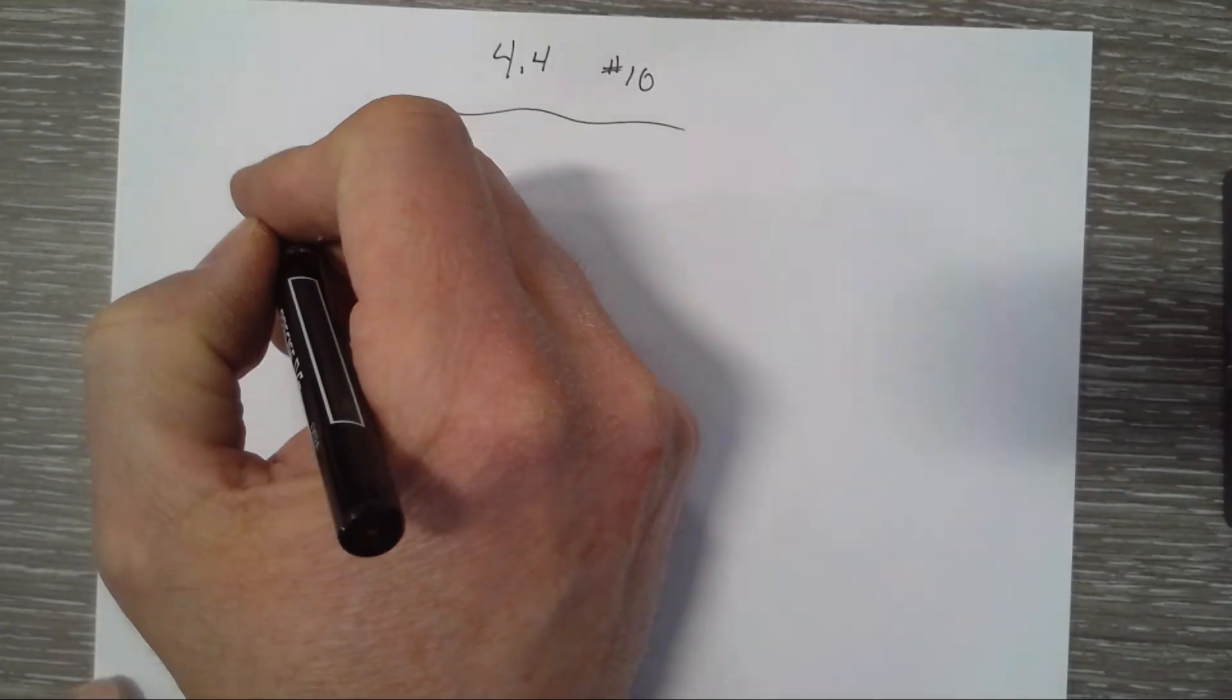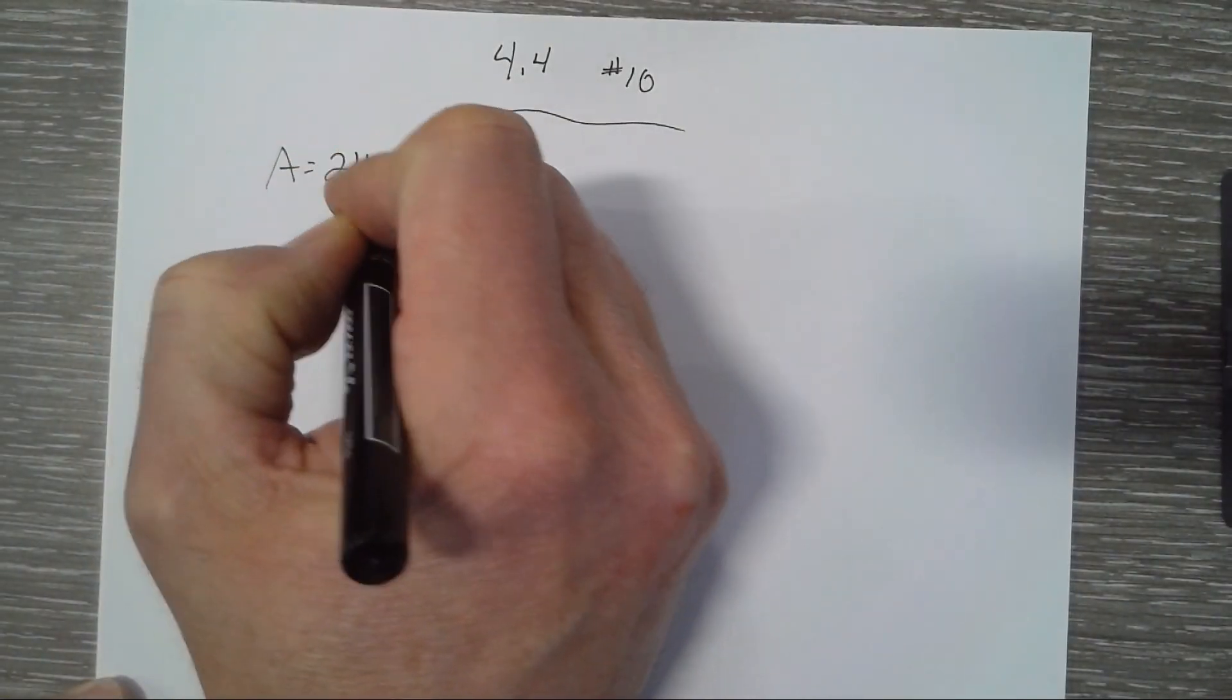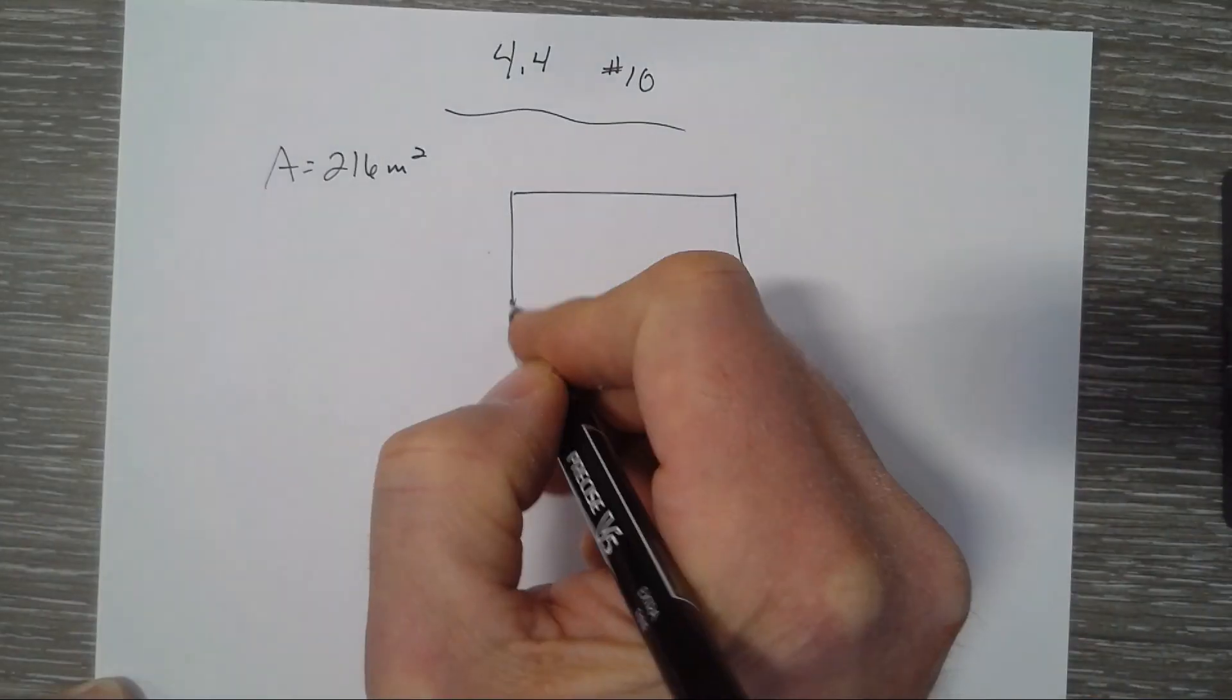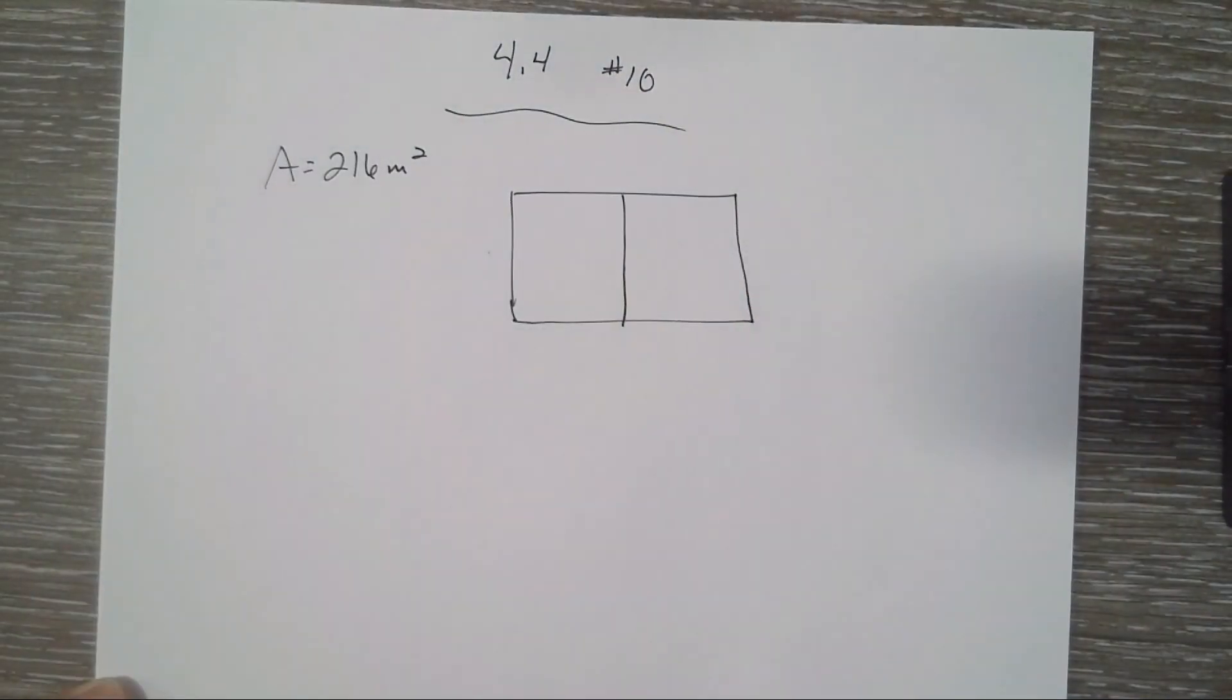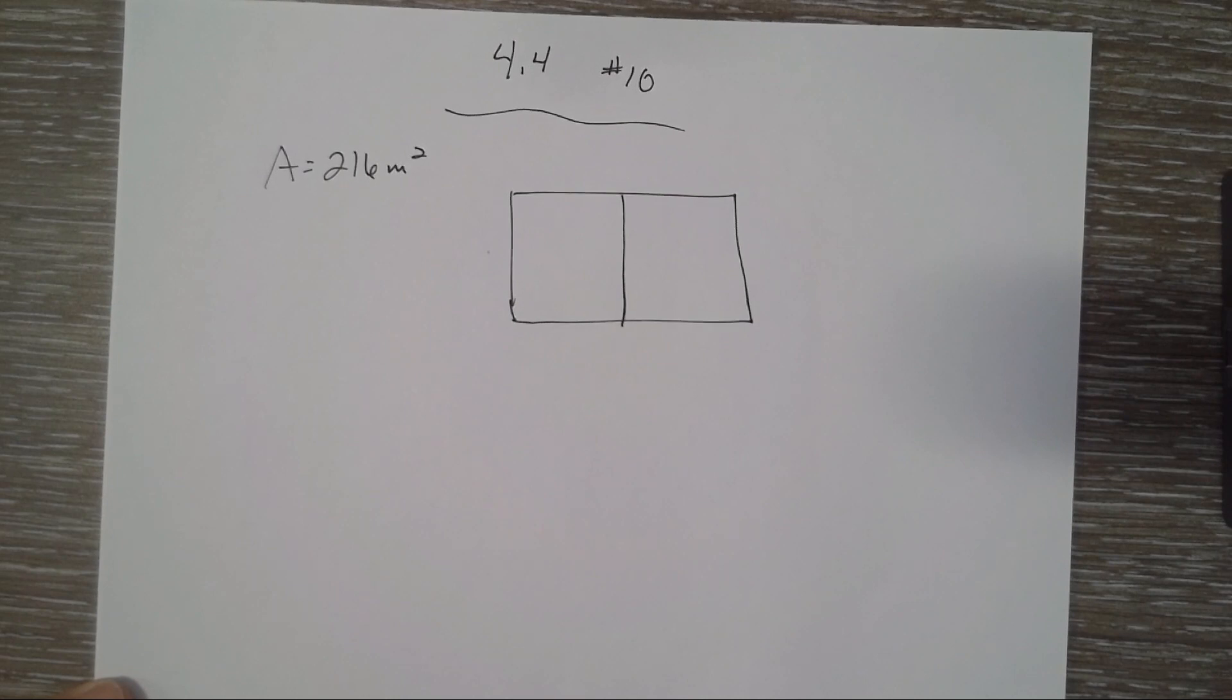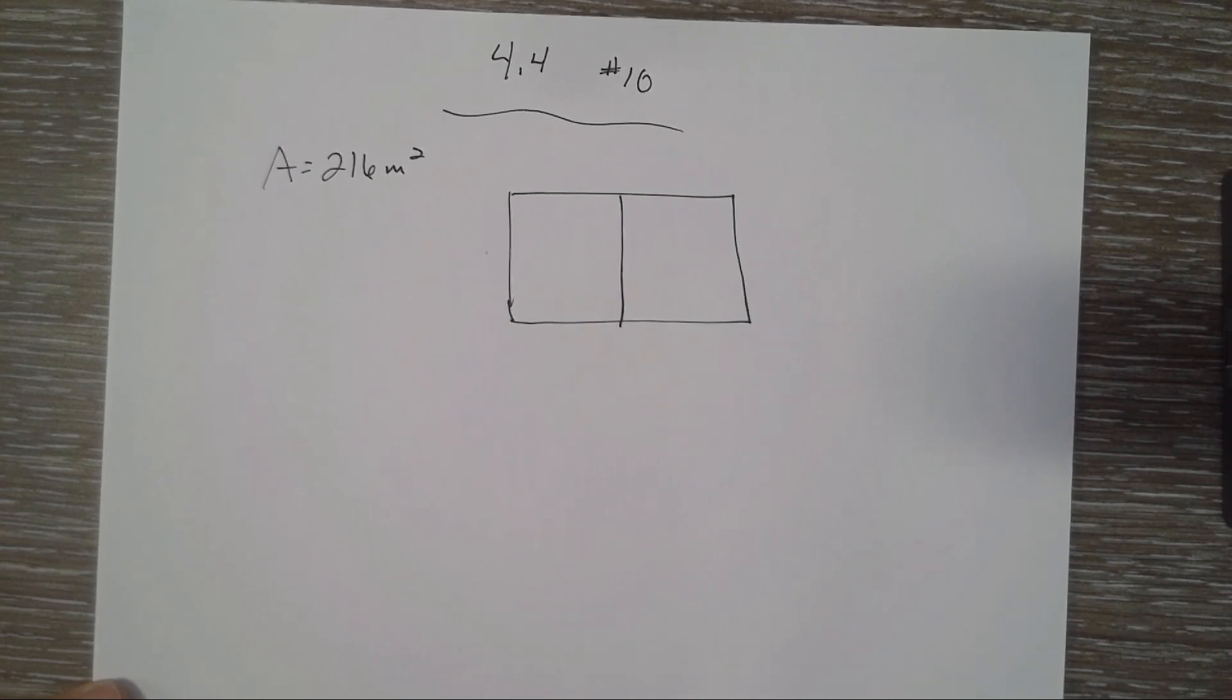So our area is 216 meters squared. We've got our two parts to our p-patch. We're trying to find one of the dimensions of the outer rectangle to acquire the smallest total length of fence. We're trying to minimize the amount of fence.